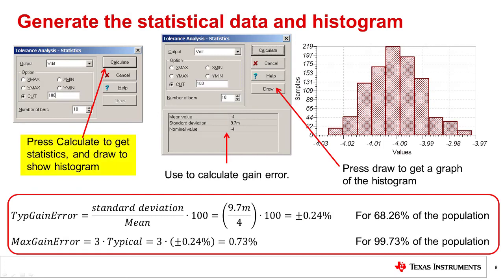Next, press Calculate on the Statistics window. This will cause the mean and standard deviation of the cut set to be displayed. This information can now be used to calculate the gain error and percentage for our circuit.